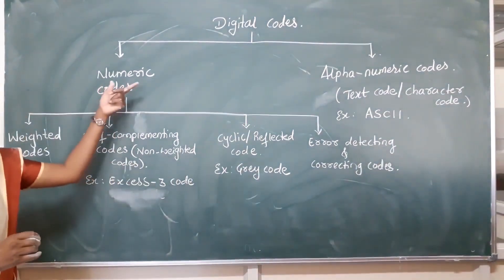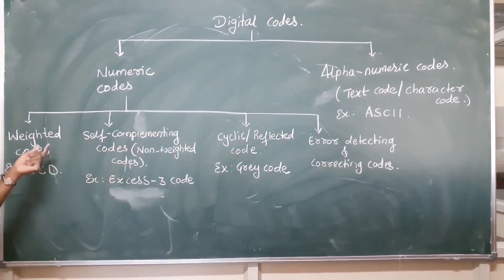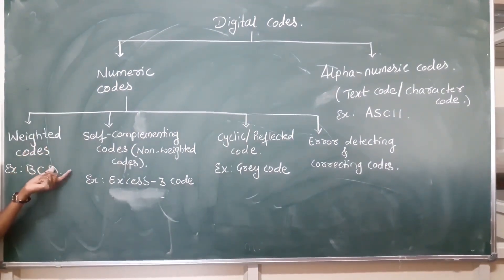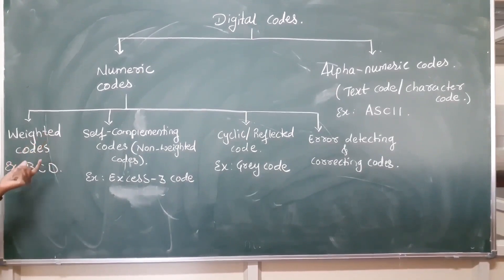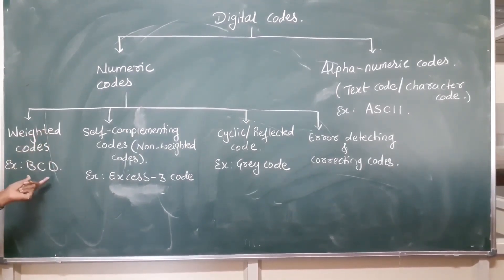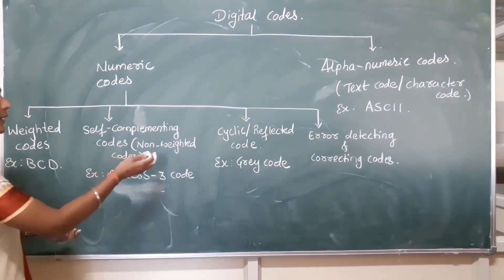For the numeric code, it is subdivided into four different types. The first one is weighted code, which has positional value for each digit. The best example for weighted code is BCD. Next comes self-complementing code or non-weighted code.